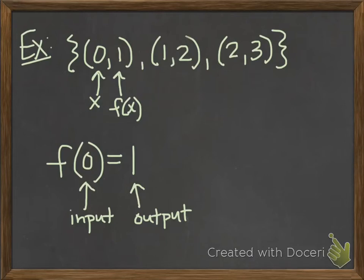The value of the function is 1 when my input is 0. So if I look at the next point, I could write it like this, f of 1 equals 2. When my function has an input of 1, my output is 2. So we're trying to get into this idea of what function notation means and what it looks like.